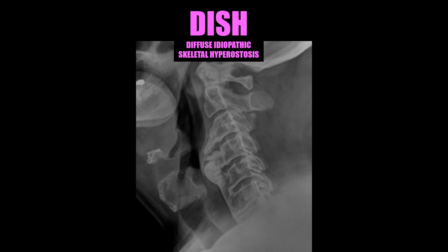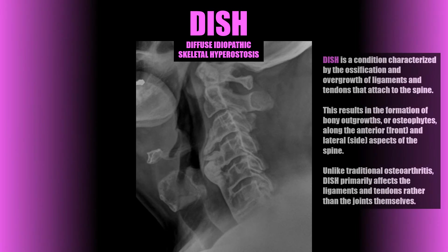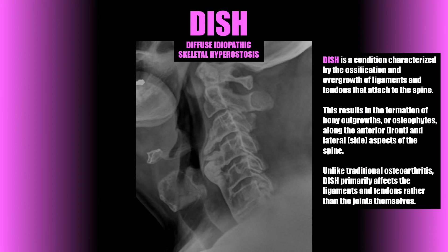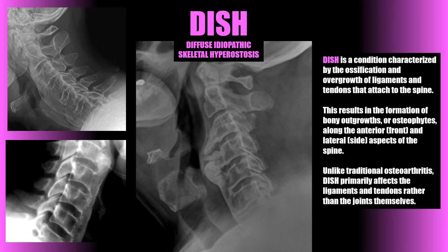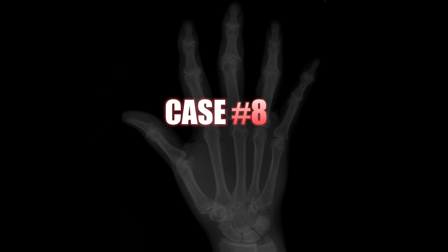Case number seven: this thick flowing hyperostosis seen anterior to the cervical spine is consistent with DISH, or diffuse idiopathic skeletal hyperostosis. DISH is characterized by the ossification and overgrowth of ligaments and tendons that attach to the spine, resulting in the formation of bony outgrowths or osteophytes along the anterior and lateral aspects of the spine. Unlike traditional osteoarthritis, DISH primarily affects the ligaments and tendons rather than the joints themselves.